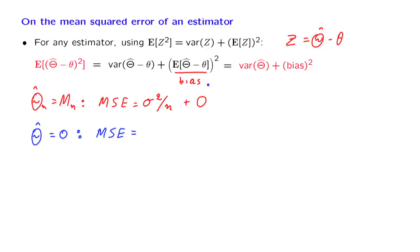On the other hand, since theta hat is 0, this term here is just the constant theta squared. And this gives us the corresponding mean squared error.